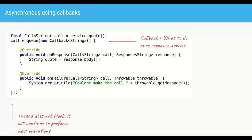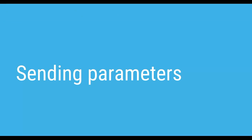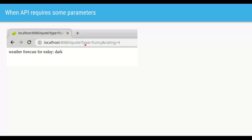Note that the failure callback handles network failures — situations where Retrofit was not even able to reach the target service, such as a timeout or network error. The onResponse callback still needs to handle different HTTP codes. So within onResponse, we check if the response is successful and extract the quote, or if not successful, extract the HTTP error code. The failure case means Retrofit couldn't reach the service at all; the unsuccessful response case means the service was reached but returned an error.